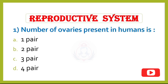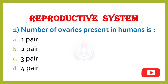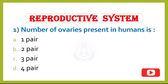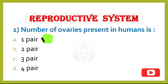Question 1. Number of ovaries present in humans is: Option A – 1 pair, Option B – 2 pair, Option C – 3 pair, Option D – 4 pair. Correct answer is Option A: 1 pair.